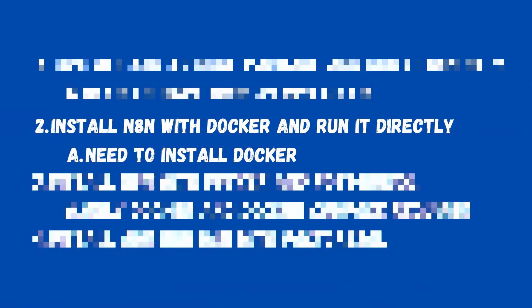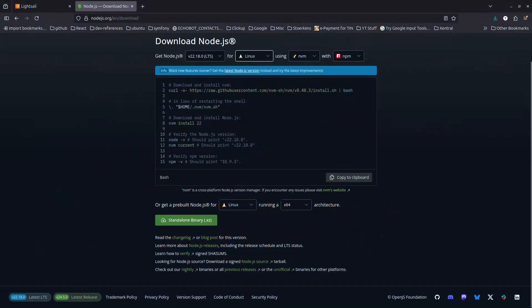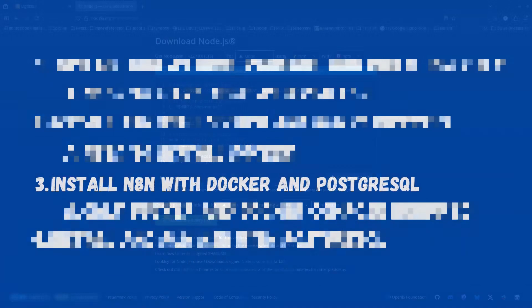The second way is to run n8n directly with Docker — for this you need to have Docker installed. The third way is to install n8n with Docker and Postgres.